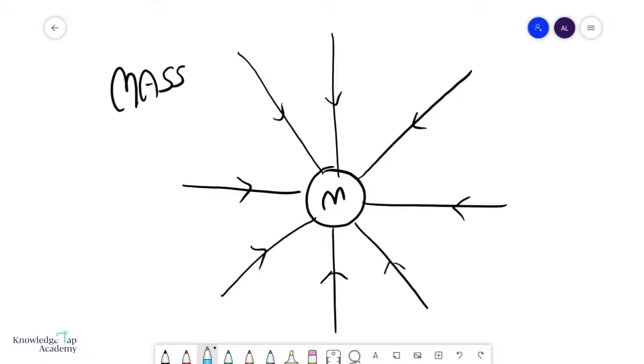And so, if I put another mass over here, it will simply follow the direction of this field line. And so, you'll see it just moves straight towards this larger mass. Very simple concept.